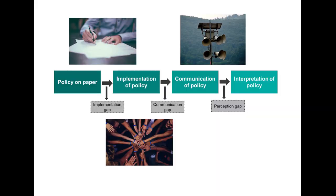The next gap is the communication gap. Often these policies are put in place and then no one's told about them, or the information shared is not very clear. It's not directly targeted at migrants and might not be in the languages they speak. So information can get lost or distorted along the way — passed on by word of mouth or like Chinese whispers — and can look very different by the time it actually reaches migrants.